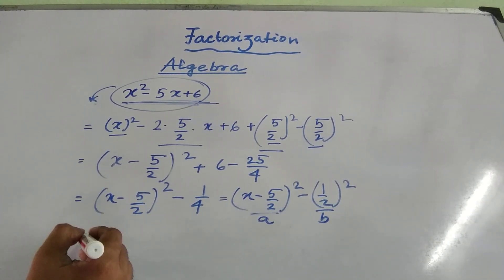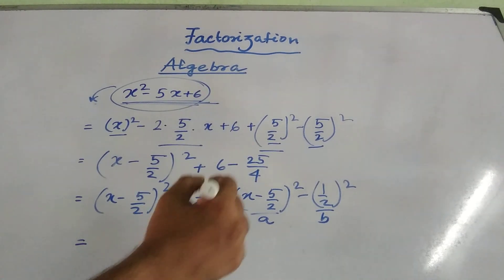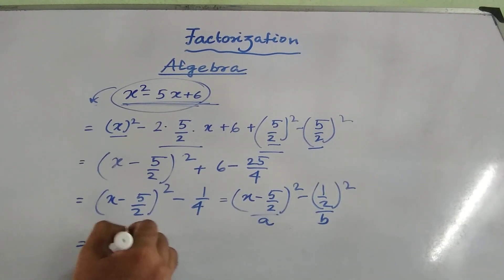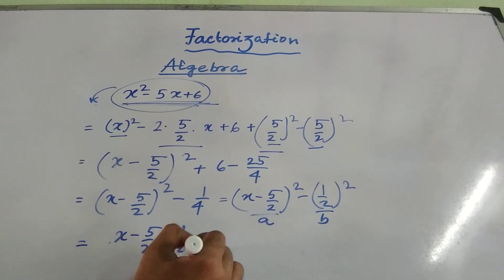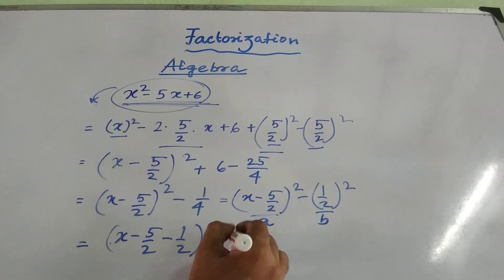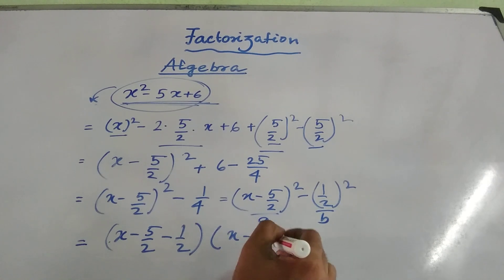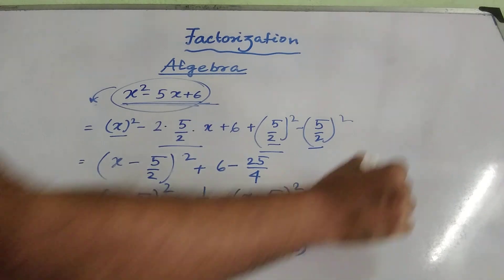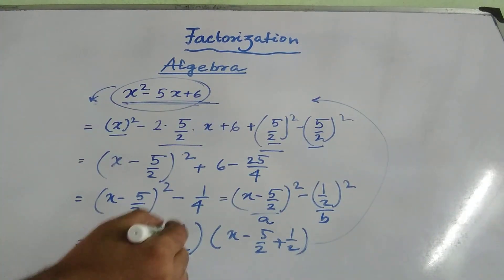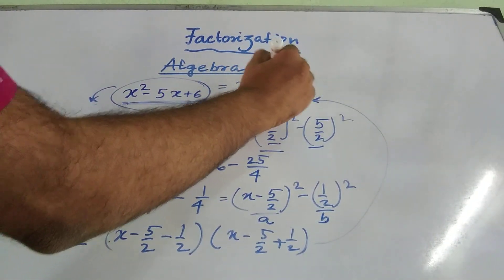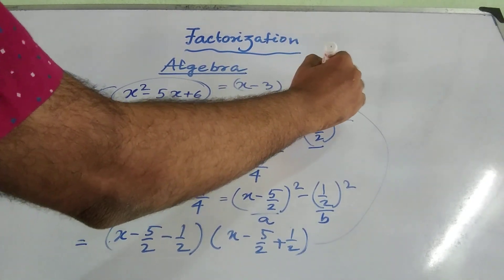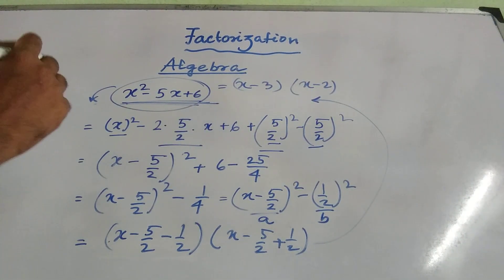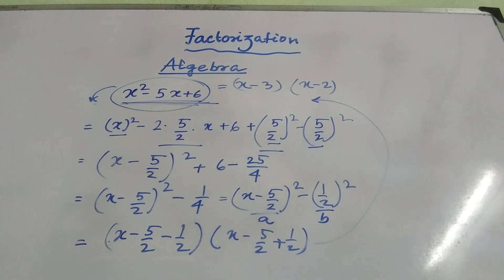Now I am able to express the entire expression as the difference of two squares, where a is (x - 5/2) and b is (1/2). Applying the formula (a - b)(a + b), that is (x - 5/2 - 1/2)(x - 5/2 + 1/2), which simplifies to (x - 3)(x - 2). So this is the first method — expressing the expression by difference of two squares.